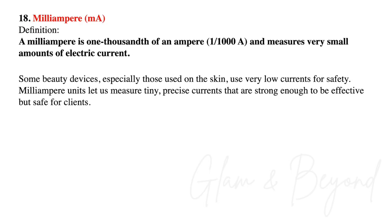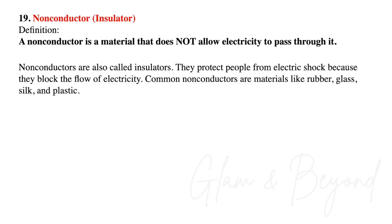Number eighteen, milliampere. A milliampere is one-thousandth of an ampere and measures very small amounts of electric current. Some beauty devices, especially those used on the skin, use very low current for safety. Milliampere units let us measure tiny, precise currents that are strong enough to be effective but safe for clients. Number nineteen, non-conductor, also known as an insulator. A non-conductor is a material that does not allow electricity to pass through it. They protect people from electric shock because they block the flow of electricity. Common non-conductors are materials like rubber, glass, silk, and plastic.